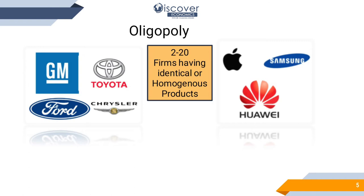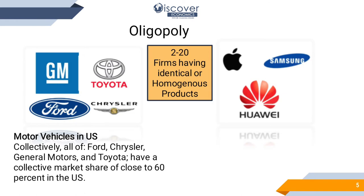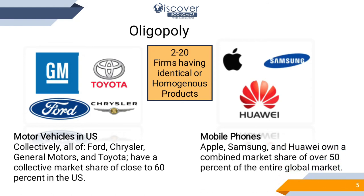Oligopoly is when two to twenty firms have control over production and supply to the market. They might have homogeneous or identical products — the products could be similar or different. For example, Ford, Tesla, General Motors, and Toyota collectively account for more than 60 percent of sales in the US economy, forming an oligopoly. Similarly, Apple, Samsung, and Huawei own over 50 percent of the entire global mobile phone market, which is also a type of oligopoly.